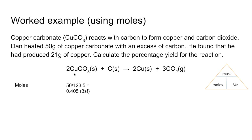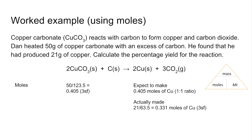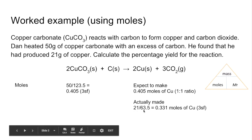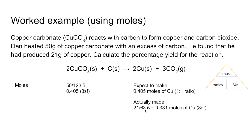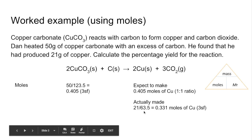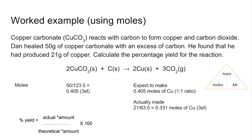Now we know how many moles of copper carbonate Dan has. By the balanced chemical equation, he would expect to make the same number of moles of copper — it's a two-to-two, i.e. one-to-one ratio. He's actually made 21 grams of copper, so we work out his actual moles: 21 divided by the Mr of copper, which is 63.5 — not two times 63.5 — giving 0.331 moles of copper.